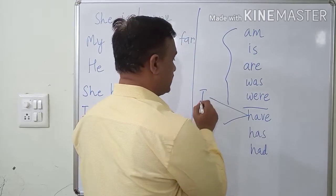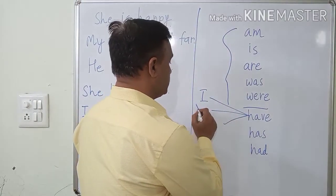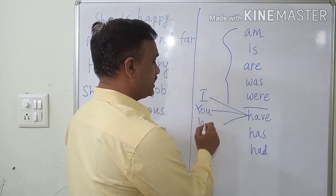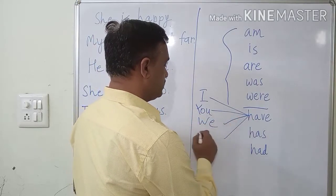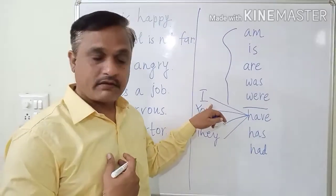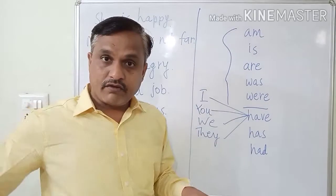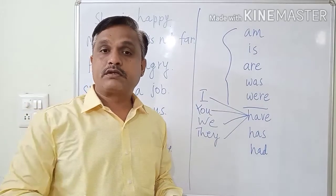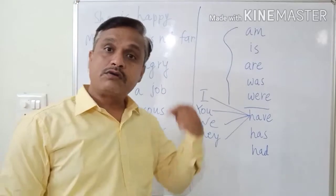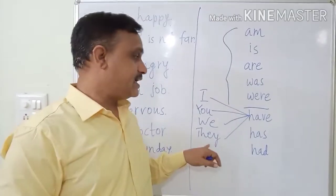I have. You have. We have. And they have. First person: I have. Second person: you have. Then when we talk about us: we have. And when we talk about the third person, but there are many: they have.